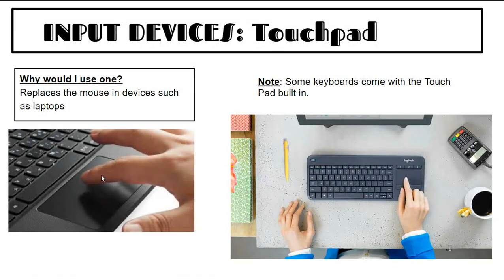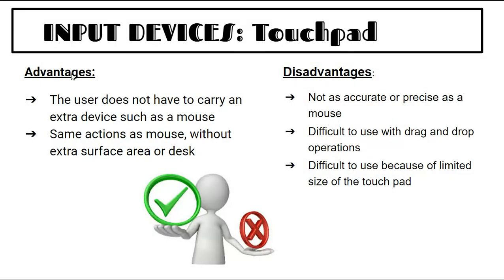A touchpad replaces the mouse on devices such as laptops — some keyboards also come with a touchpad built in. Advantages: you don't have to carry an extra device like a mouse, same actions as a mouse without extra desk space. Disadvantages: not as accurate or precise as a mouse, difficult to use for drag and drop, and limited by the small size of the touchpad.